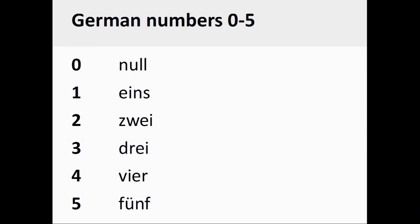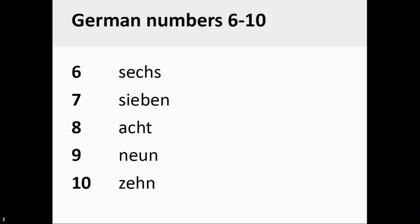The German numbers 0 through 5 are pronounced null, eins, zwei, drei, vier, fünf. The German numbers 6 through 10 are pronounced sechs, sieben, acht, neun, zehn. You will note that the numbers 0 through 10 are formed in a manner that is very similar to English.